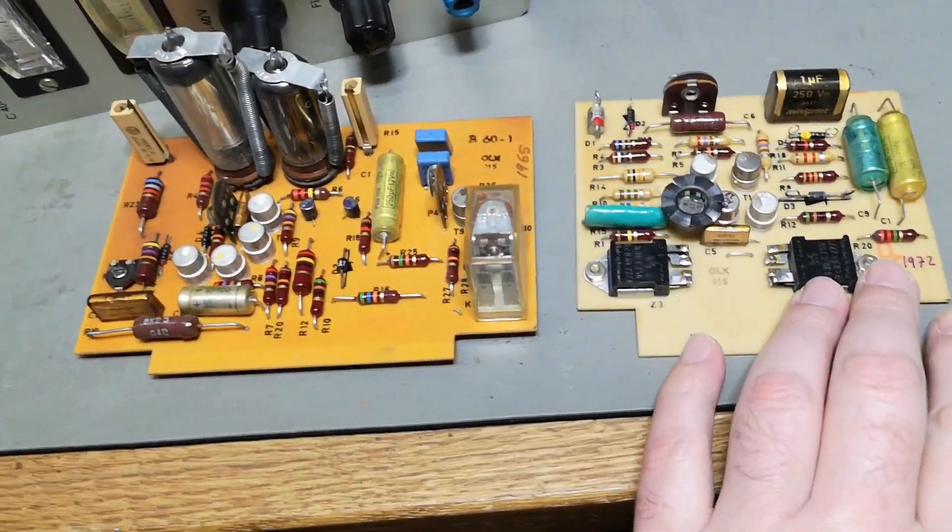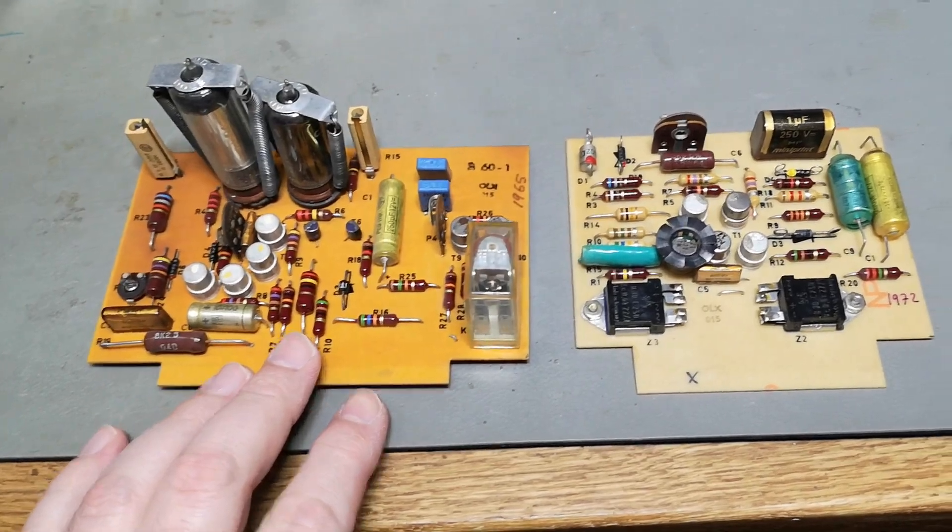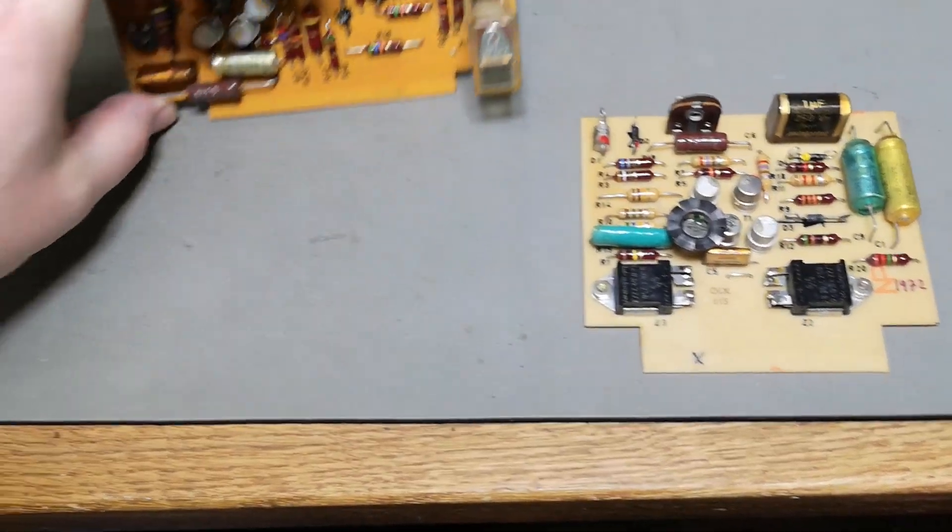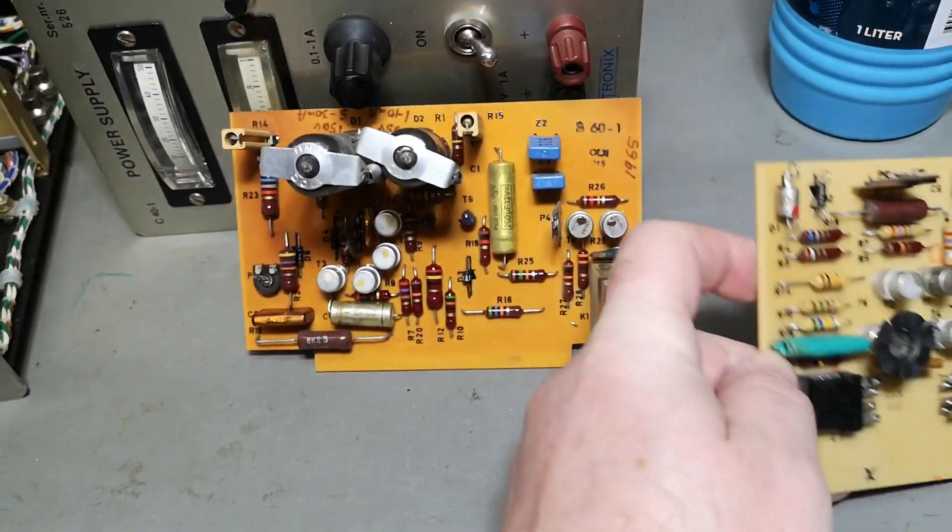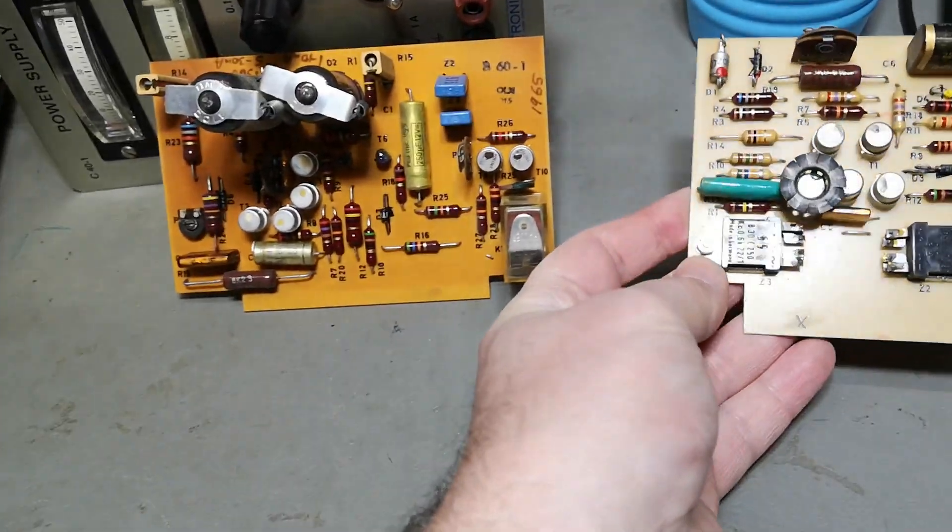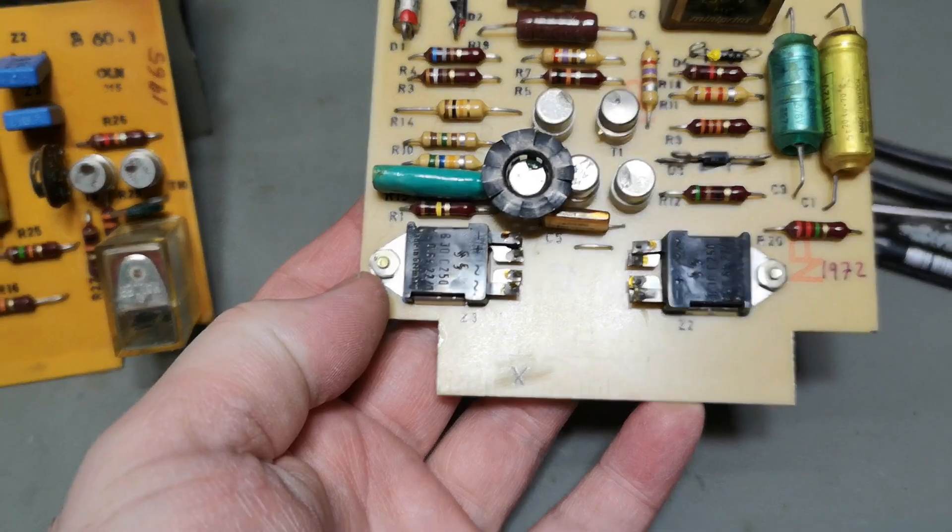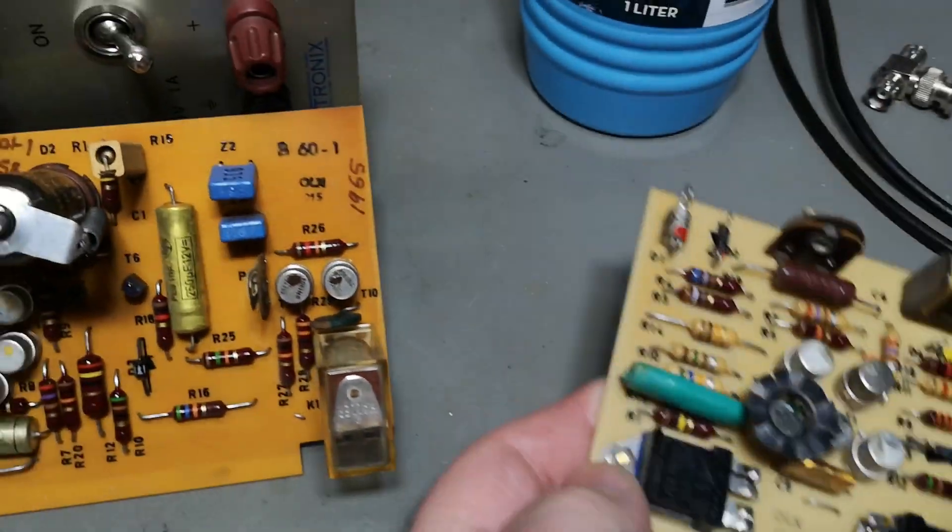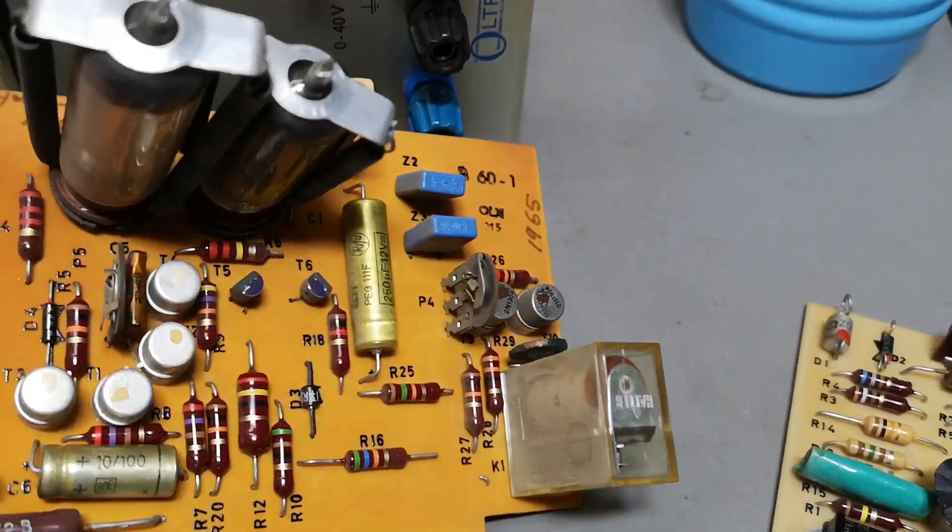See the two bridge rectifiers, SET2 and SET3, they're here as well. SET2, SET3. And look at the two voltage regulators.